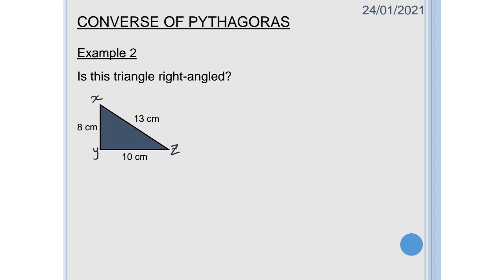So let's look at another quick example. Again it's asking me is this triangle right angled? I've got all three of my sides so what I'm going to do quickly is I'm going to label them